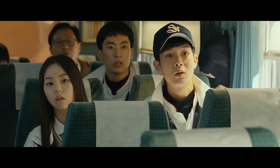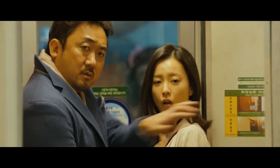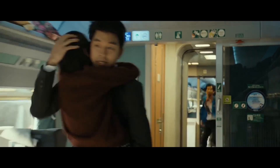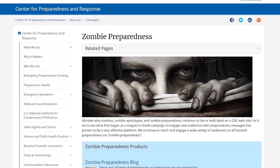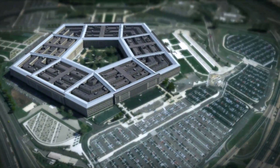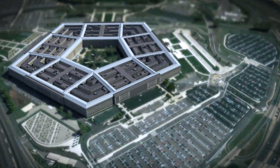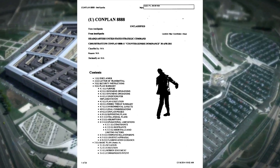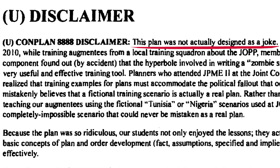In every zombie movie, people try to survive and flee to that one place that is free from zombies. In this video, we're going to talk about a scientific research that reveals whether and where we can survive a zombie apocalypse. In case you think it isn't nonsense, the CDC had a page for zombies before COVID, and even the Pentagon has an unclassified document that details a zombie survival plan.